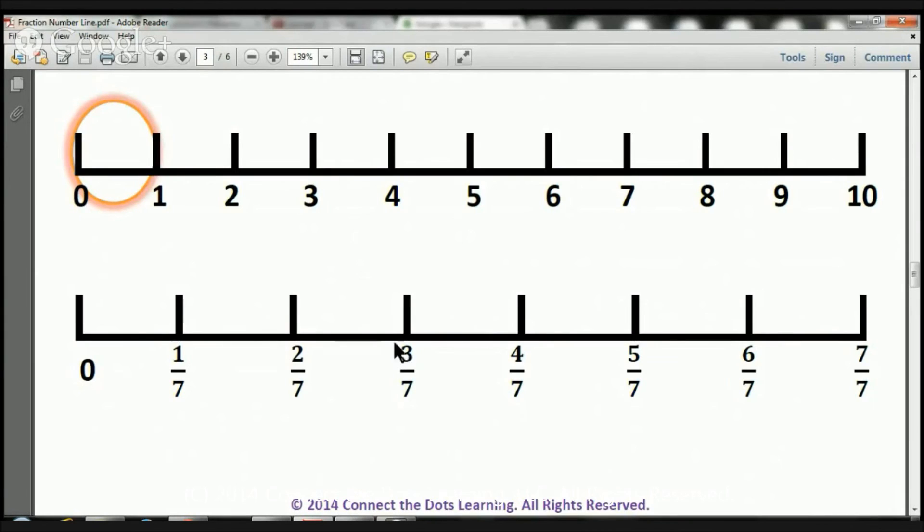From 0 to here, we've got 3 7ths, 1, 2, 3 pieces. From 0 to here, we've got 4 7ths.